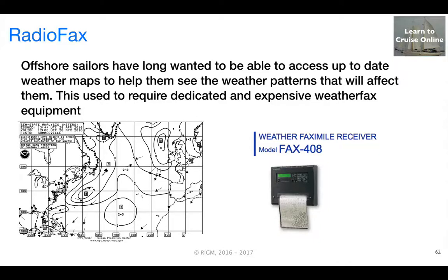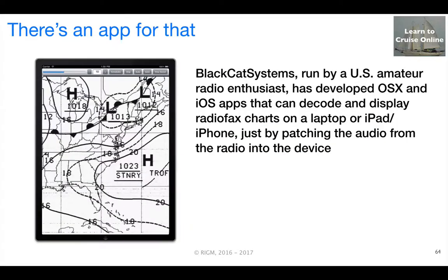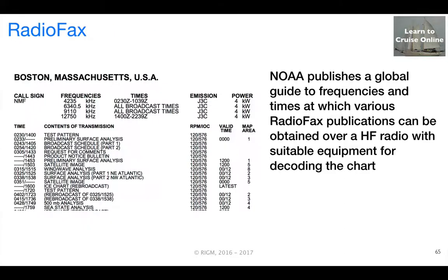For decades, sailors have been able to get weather maps over dedicated weather fax equipment. What's more recent is that these can be obtained through various automated services by email auto-response or FTP. And even more recently, instead of requiring a dedicated weather fax, Black Cat Systems — run by a U.S. amateur radio enthusiast — has developed apps that run on Macs and iOS that can decode and display a radio fax chart on a laptop or iDevice, just by patching the audio from the radio into the device. This innovation means that a much larger group of sailors may wish to take advantage of NOAA's weather fax broadcast schedule.